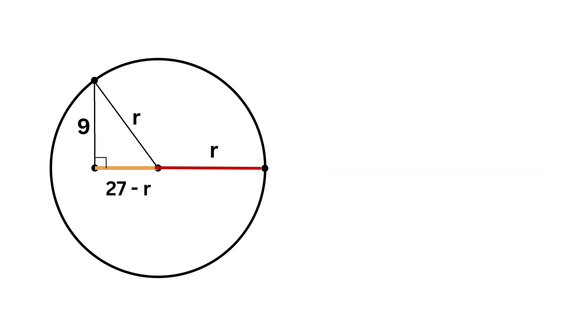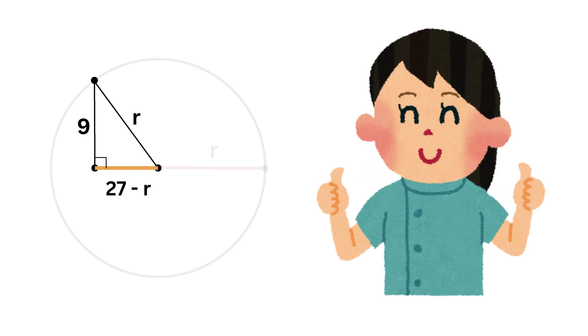Now here comes the main trick. Look at this right triangle. The two legs of this right triangle are 9 and 27 minus r, and the hypotenuse is r. Now what do you think we are going to use?